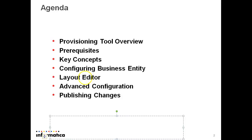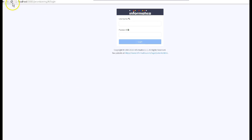Below are the features available in the provisioning tool. You can configure your business entity. It has a tab called layout editor through which you can edit your 360 view. It has a tab called advanced configuration, which is an XML editor where you can directly change different kinds of XML. And lastly, once your changes are done you can publish those changes to the MDM hub.